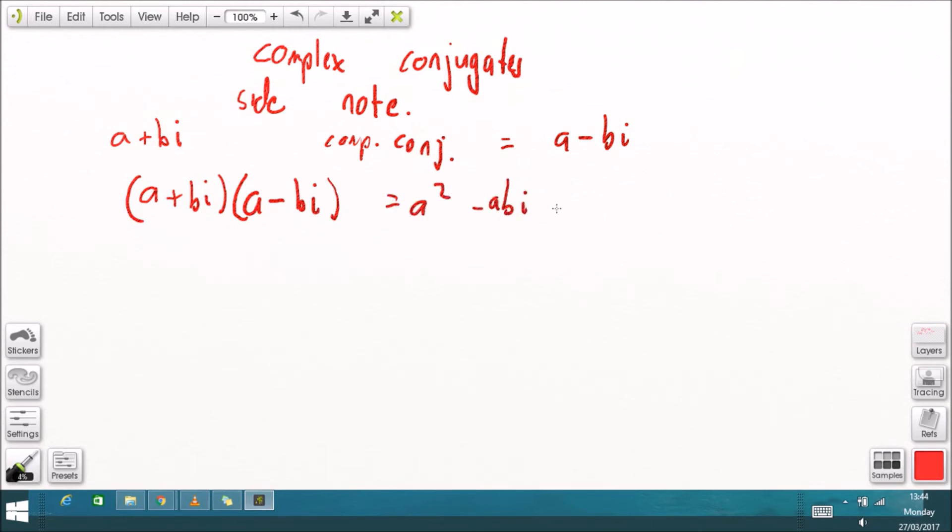useful because if we then multiply the number, the complex number with its complex conjugate we get this expression and negative one, the square root of negative one is i so i squared is negative one